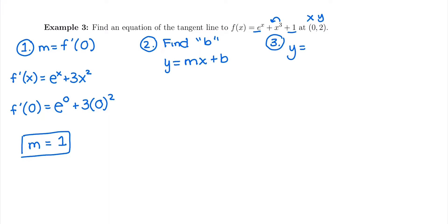So there's my slope in my first step. My second step is to just write out y equals mx plus b and plug in everything I know. So the y value of this point is 2. The slope we found in the first step is 1. And the x value of the point is 0 plus b.